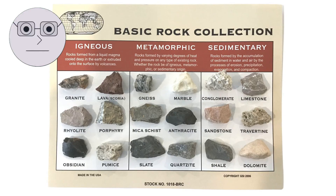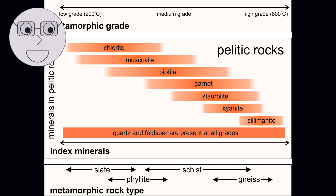The most common elements found in metamorphic rocks are silicon, oxygen, aluminum, calcium, iron, and magnesium. These elements combine to form minerals such as quartz, mica, and garnet.